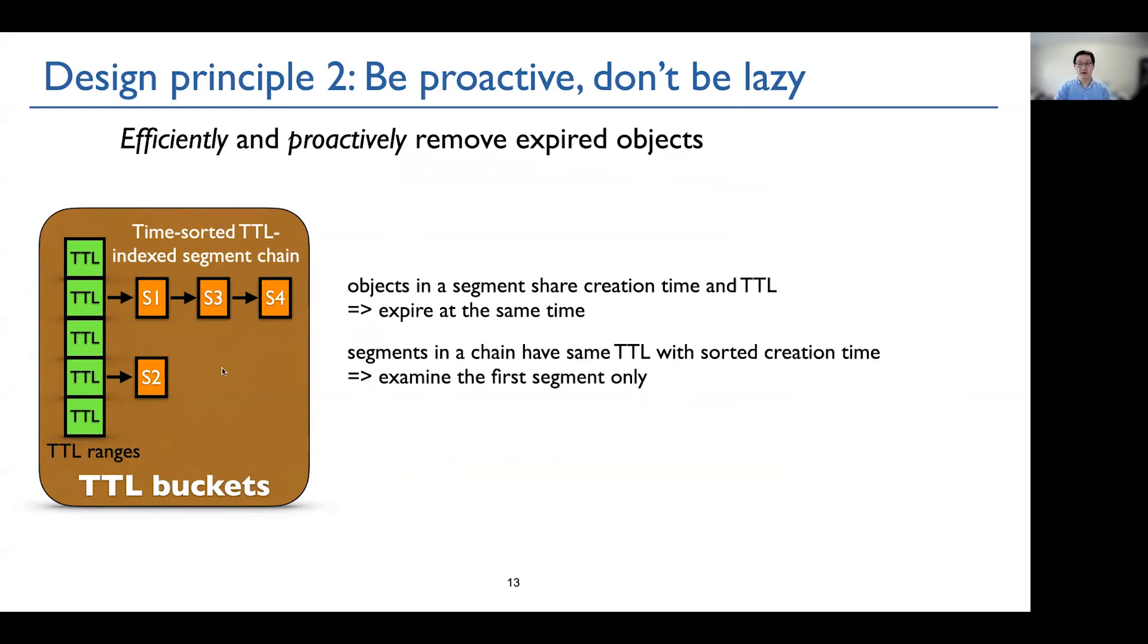Further, segments in the same chain have the same TTL with sorted creation time. Therefore, segments in the same chain have sorted expiration time. So S1 here expire before S3 and S4. So with these two, here is how Segcache achieves efficient proactive TTL expiration.